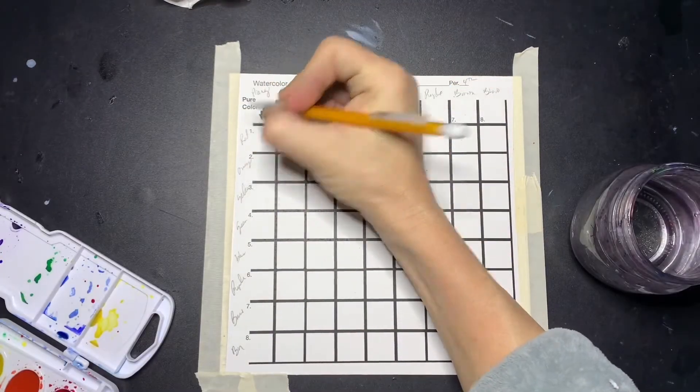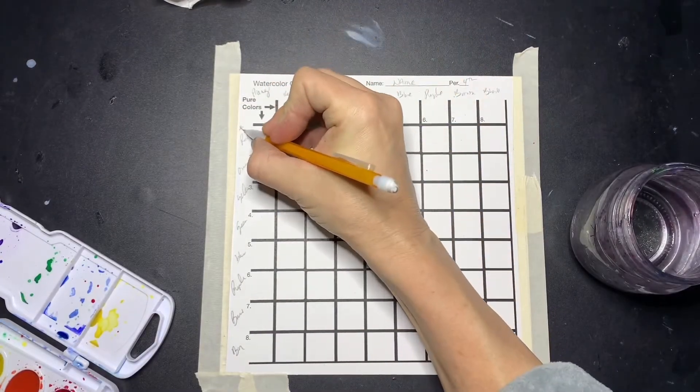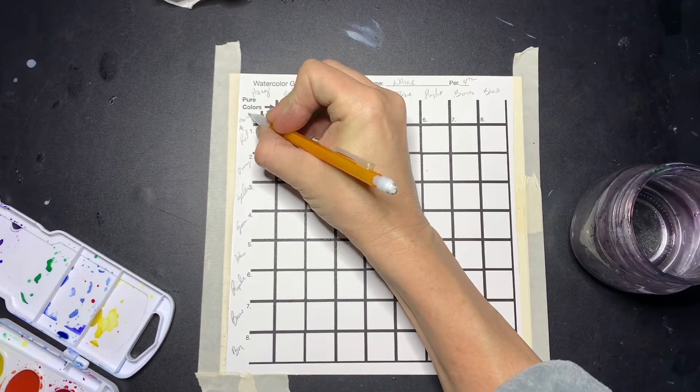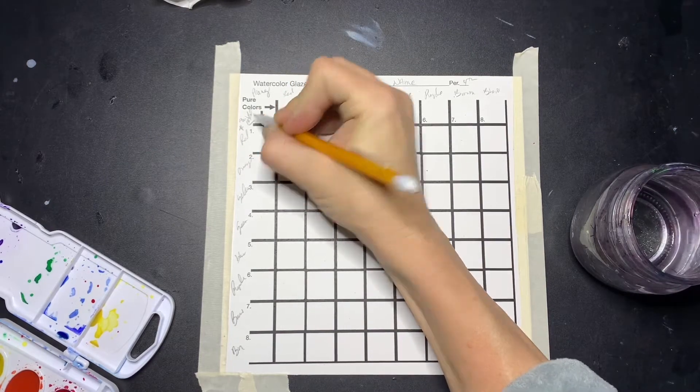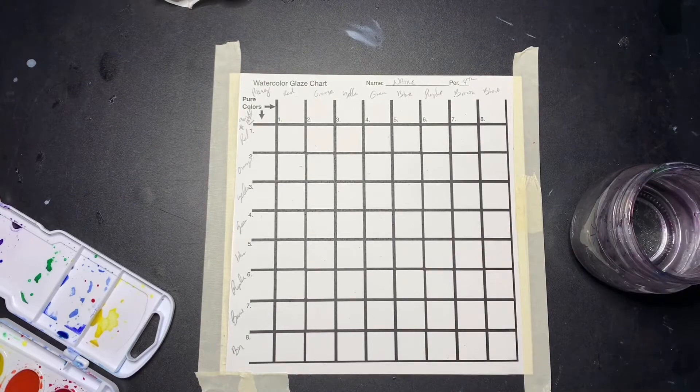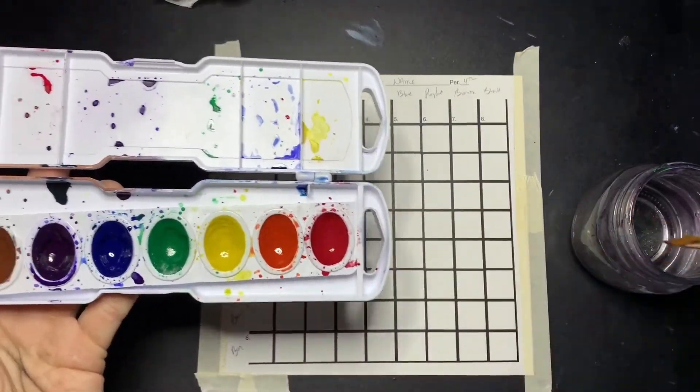Next, make a star or write 'painted first' beside either the rows or columns. That way, when everything is dried and the second layer is added, you can look back and know what was painted first.